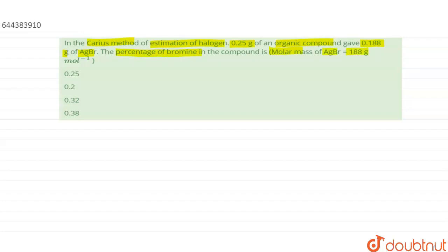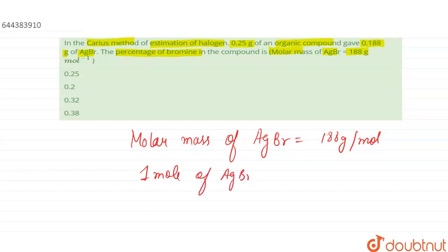So the molar mass of AgBr in the question is given as 188 gram per mole, right? So can I say that one mole of AgBr will have 188 gram of AgBr, that is silver bromide.